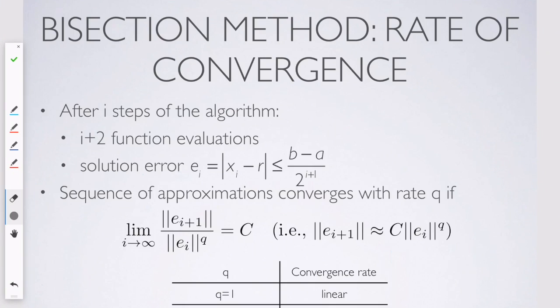Let's say a few things about error and convergence. First, I'll just point out that after i steps of the algorithm, you have i plus two function evaluations. And the two is because you start out by evaluating f of a and f of b.